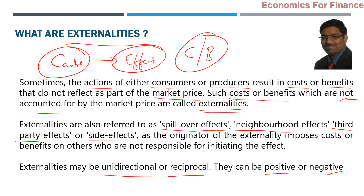The effect is on somebody else while the originator doesn't care about that impact on others. If it is a benefit, the people who enjoyed it from others' actions are enjoying it freely. If it is a cost, they are bearing pain caused by somebody else. The point, once again: externalities are caused by somebody and the effect is on somebody else. They may be positive or negative; rarely they could be reciprocal, but in general they are unidirectional.